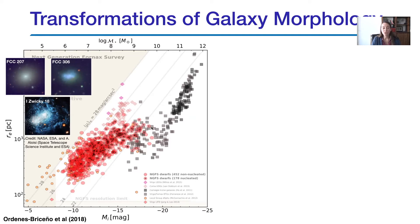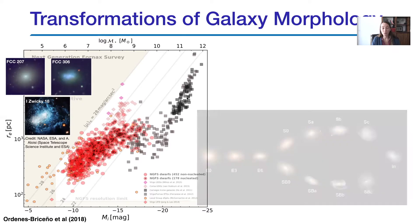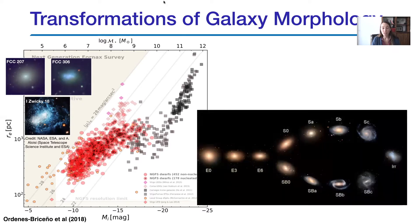At this point, they start to transition onto the second sequence, which is the massive galaxy sequence. This is where you would find the typical Hubble sequence galaxies — the ellipticals, spirals, and S0s. At some point in this transition region, the dwarf galaxy morphology starts to become much more complex. They start to develop structures such as bulges, disks, spiral arms, and bars.